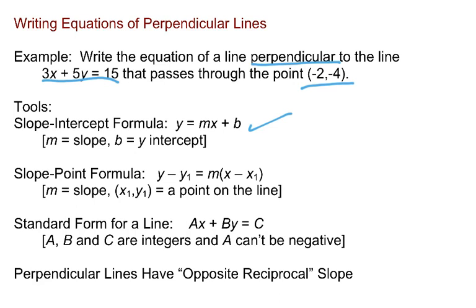You also need to know the slope-point formula: y minus y₁ equals m times the quantity x minus x₁. In this formula, the m stands for slope again, but the (x₁, y₁) refers to just any point on the line, doesn't have to be the y-intercept.